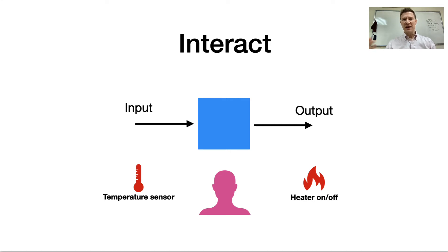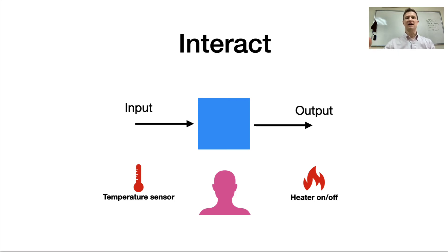But there's no automation here. This is a person still using the information from the sensor to make a decision and say, I'm going to turn on the heater so that I can get warm.